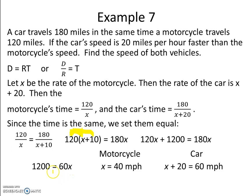Subtracting 120x from both sides of the equation, we find that 60x equals 1200. Dividing by 60, we find that the motorcycle is going 40 miles an hour.